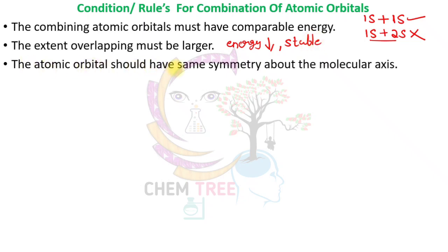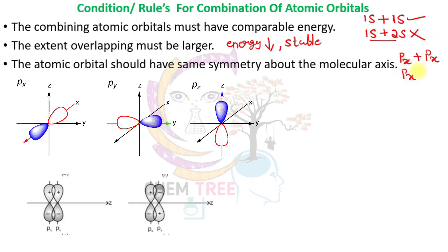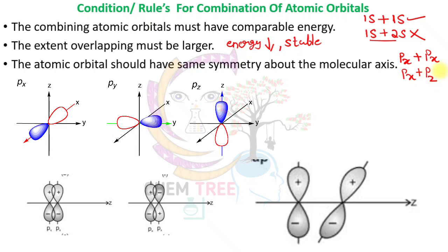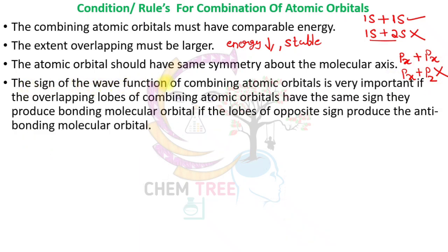The third rule: the atomic orbitals should have the same symmetry about the molecular axis. For example, px can combine with only px atomic orbital. Combination of px with pz atomic orbital is not possible because px and px have the same symmetry and internuclear axis, whereas px and pz have different symmetry.